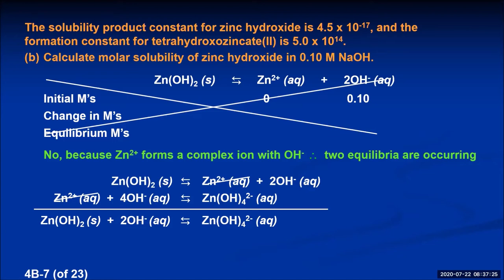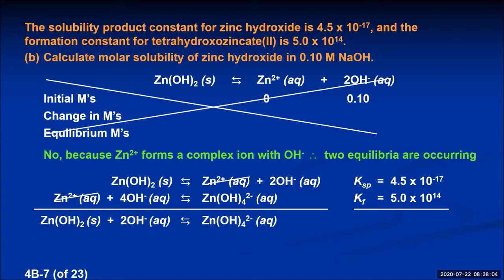We need the equilibrium constant for this combined bottom reaction. The Ksp for zinc hydroxide is 4.5 times 10 to the minus 17th. The Kf for tetrahydroxozincate 2 is 5.0 times 10 to the 14th. When you add two reactions together to make a third, the equilibrium constant for the third reaction is the product of the equilibrium constants for the two reactions. So multiply 4.5 times 10 to the minus 17th by 5.0 times 10 to the 14th, giving an overall equilibrium constant of 2.25 times 10 to the minus second.